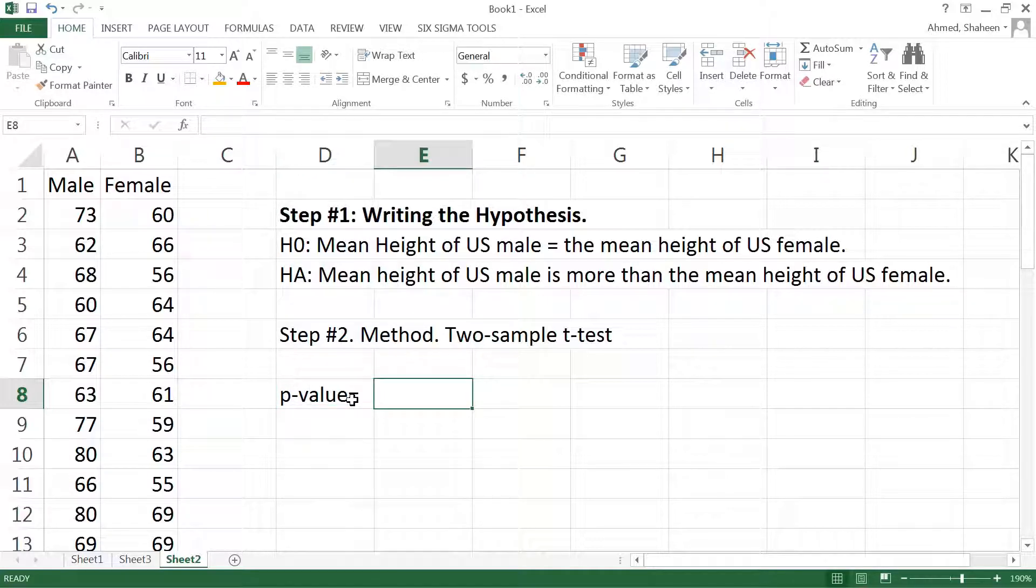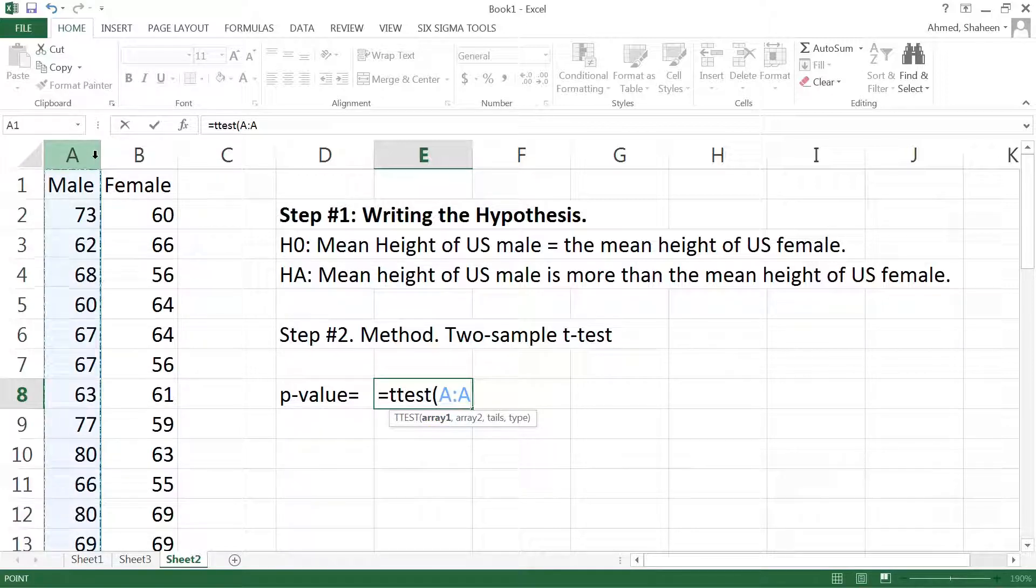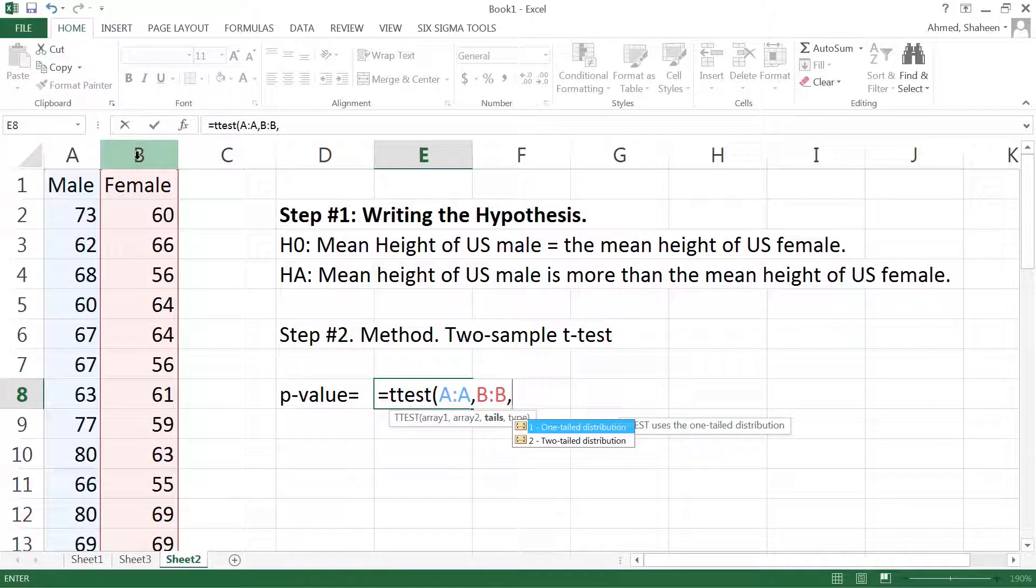So we can write a formula called equal t.test that will produce the p-value from two data sets. It says Array 1, which is data set one, and then comma, Array 2, data set two, comma. And then it is asking for either one-tail distribution or two-tail distribution. Now that depends on our alternative hypothesis. If the alternative hypothesis is one-sided, then it will be one-tail distribution. In this case it is one-sided, it is more than. If we would write something like not equal, in that case it would be either more than or less than, so there are two-sided, two-tail. In this case it is one-tail, so we can just choose one.